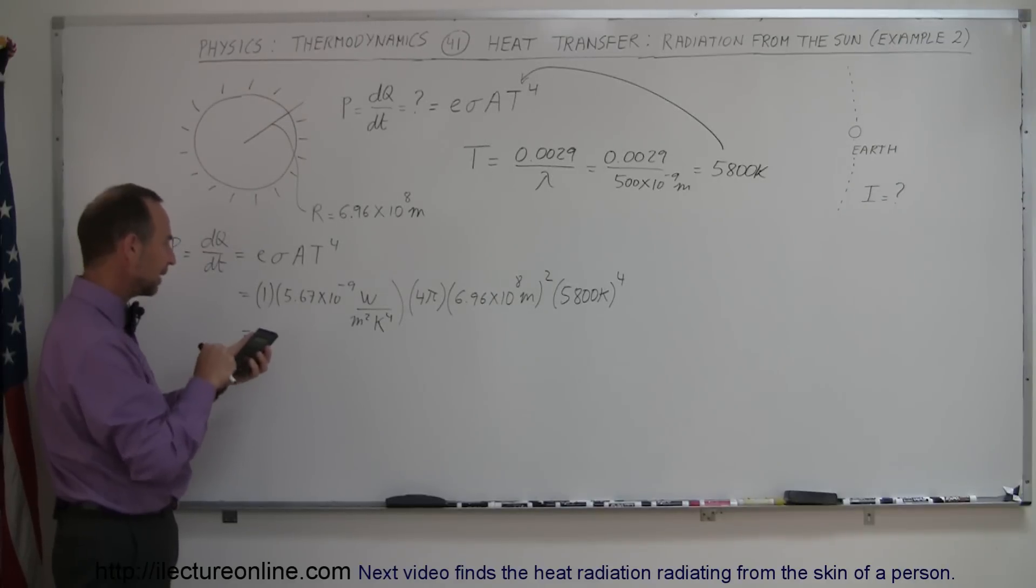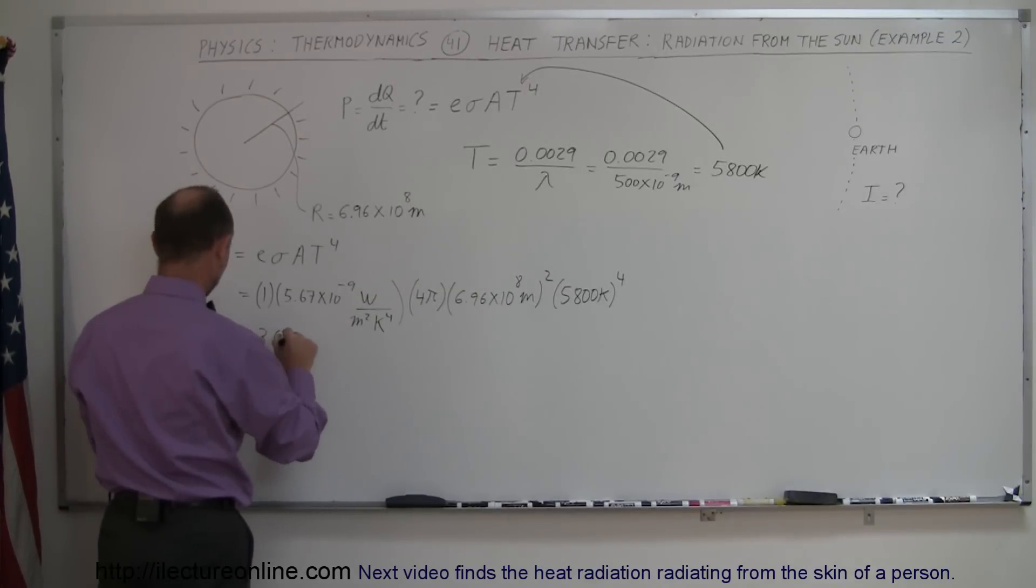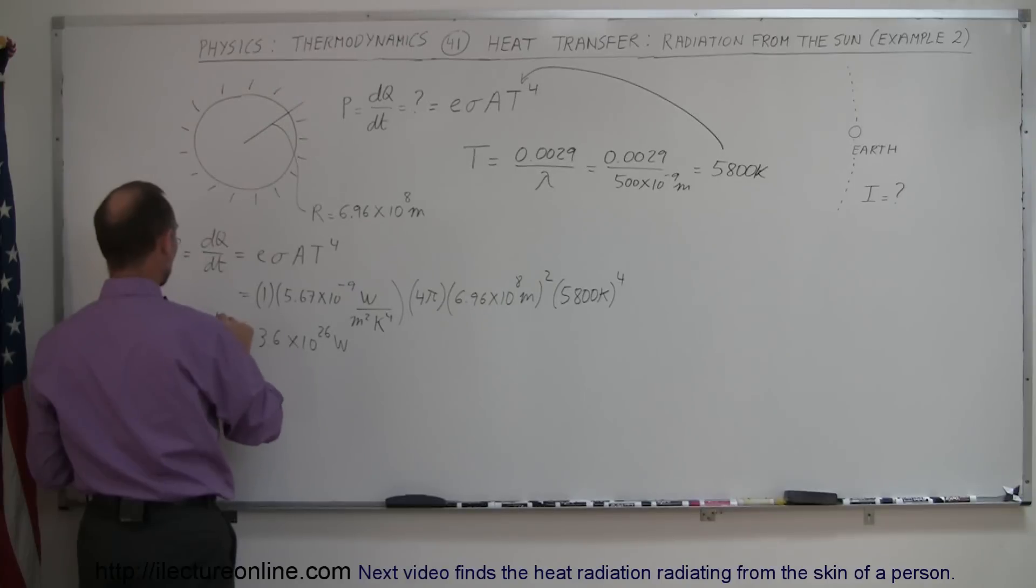5.67 E to the minus 8 times 4 times pi times 6.96 E to the 8. We have to square that. And then, we multiply that times 5,800 to the fourth power. And so, it gives us 3.6 times 10 to the 26th watts. So, that is the power output or the dQ/dt of the sun.